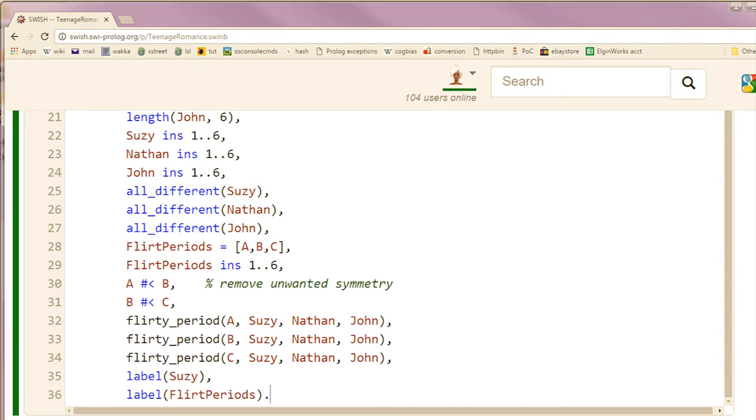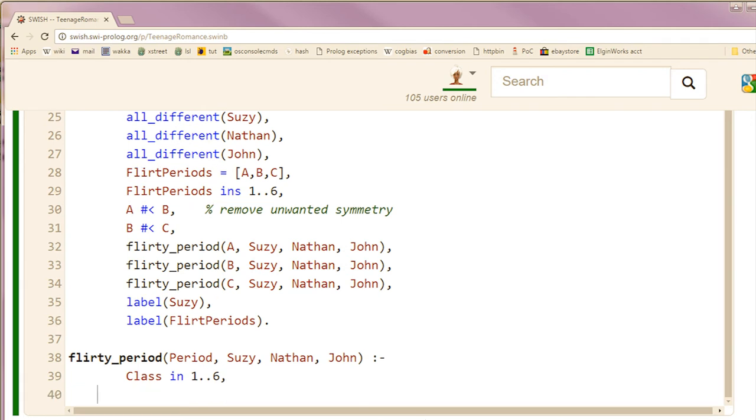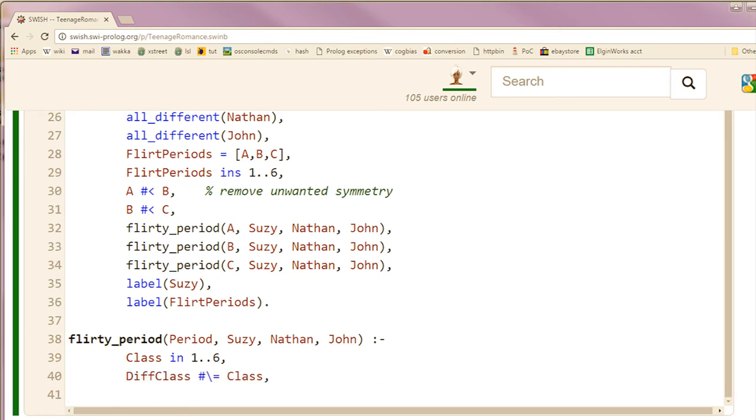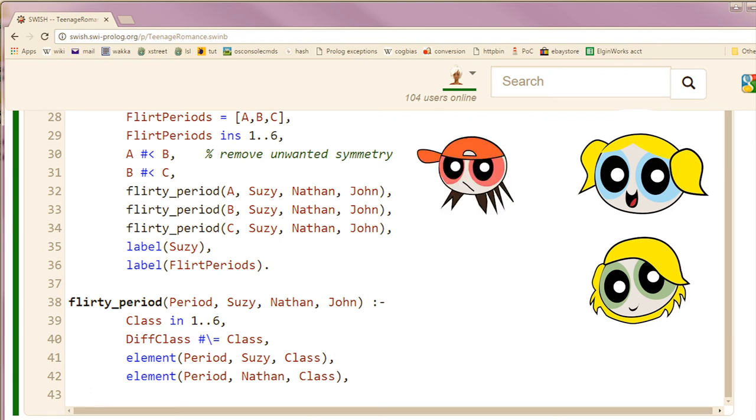But what about flirty period? Oh yes. Pick a class to be the class that Susie flirts in. Note, this is the class, not the period. Make a different class for John to be in. Find a period when Susie is in that class. Enforce Nathan being in that class that period so Susie can flirt with him, and make sure John is in a different class then.